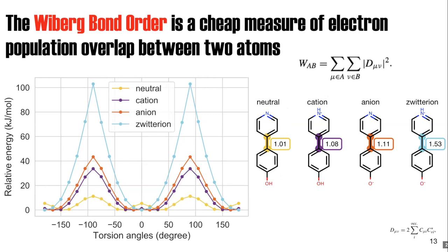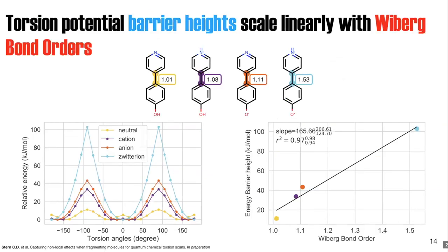For this series of biphenyl molecules, in the neutral molecule we end up with a bond order close to one, increasing to around 1.5 for the zwitterion. When we plot the energy of the barrier heights against the Wiberg Bond Order, the relationship is pretty linear. This tells us we may be able to use this relationship to interpolate torsion parameters for the same torsion types in different chemical environments, and also to determine if fragmentation destroyed the chemistry of the central bond.